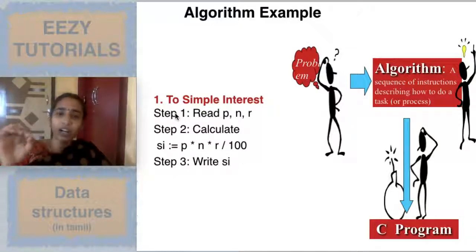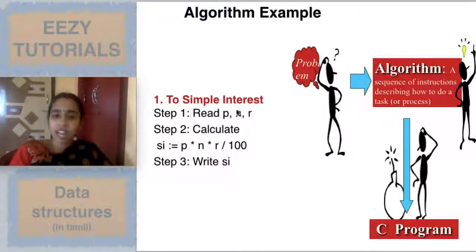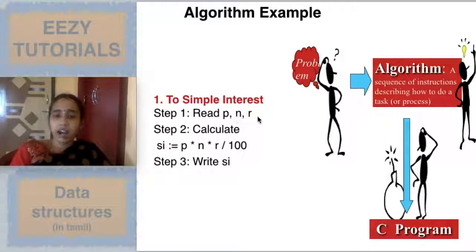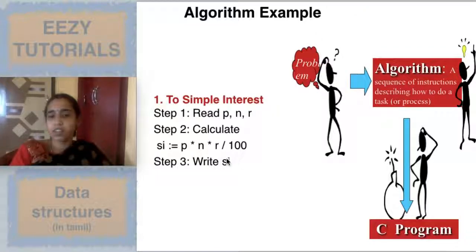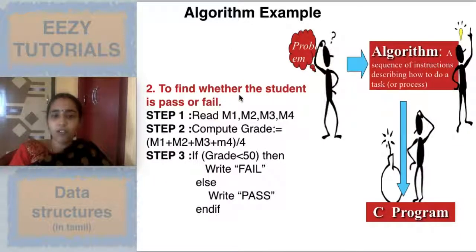Let's see an example: how to calculate simple interest. When writing an algorithm, you don't need to write 'start the algorithm' or 'stop the algorithm.' Always start with input and end with output. Step 1: Read P, N, and R. Step 2: Calculate SI = P × N × R / 100. Step 3: Print SI. This is a very simple algorithm.